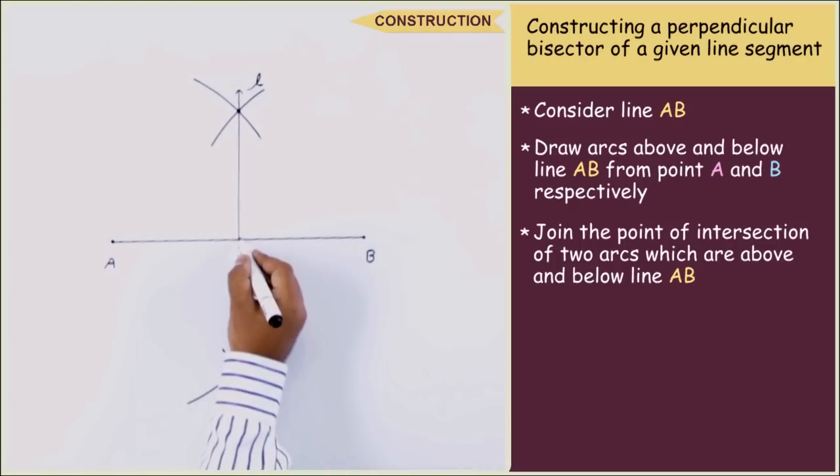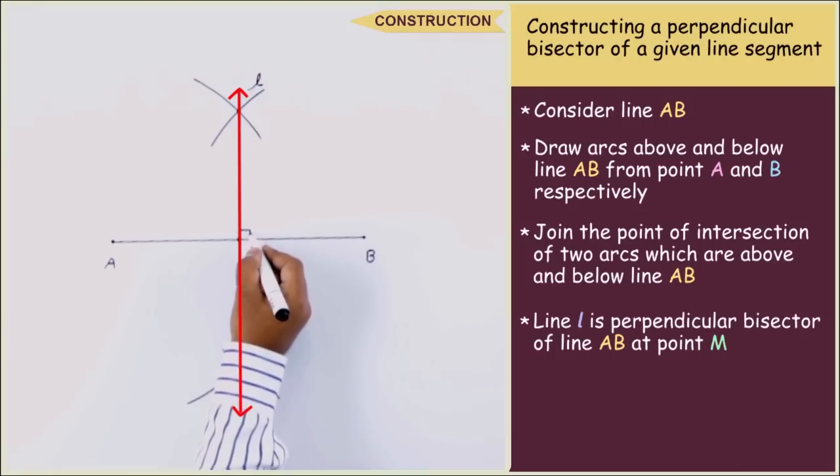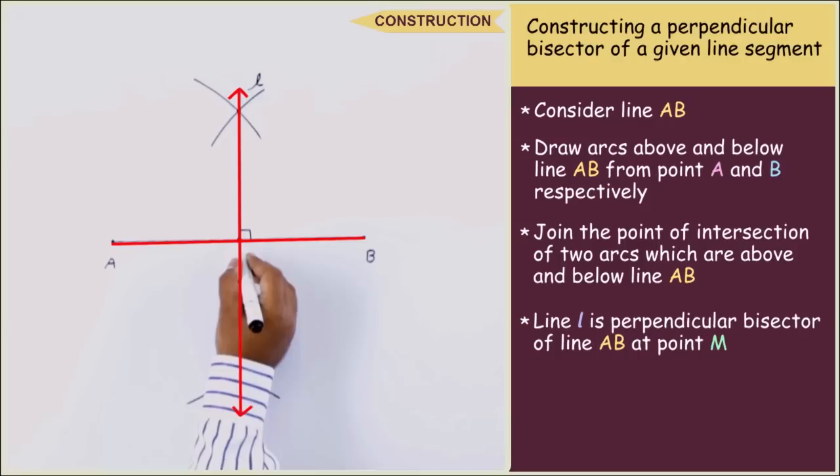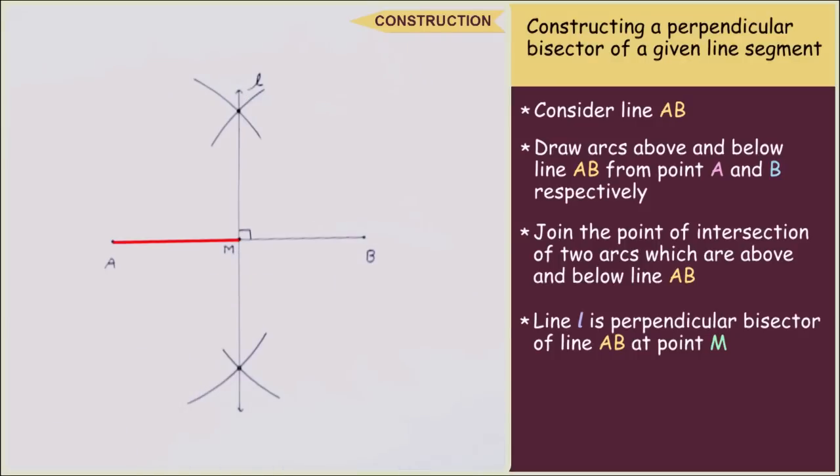Now we can see that line L is perpendicular bisector of line AB at point M and AM is equal to BM. Now we know how to construct a perpendicular bisector of a given line segment.